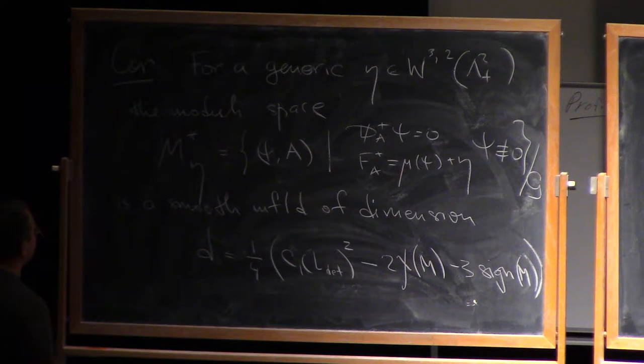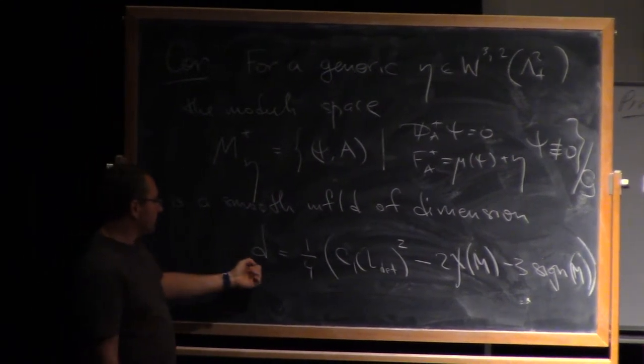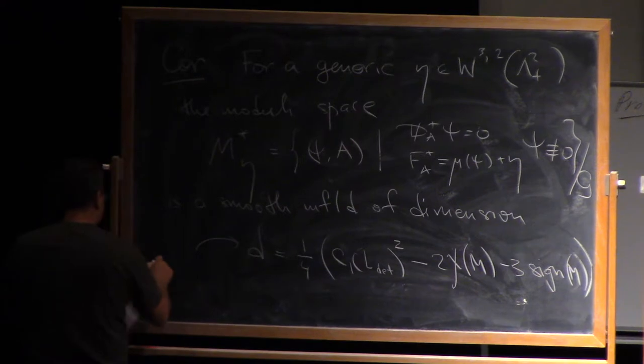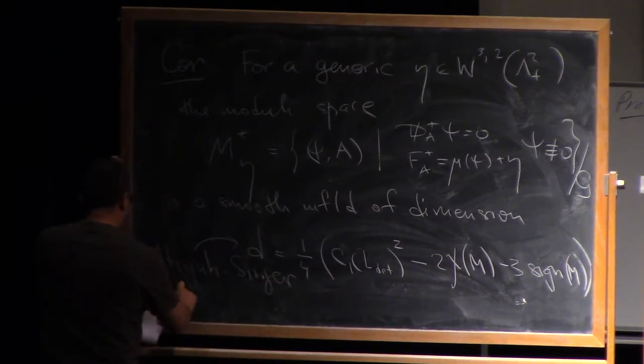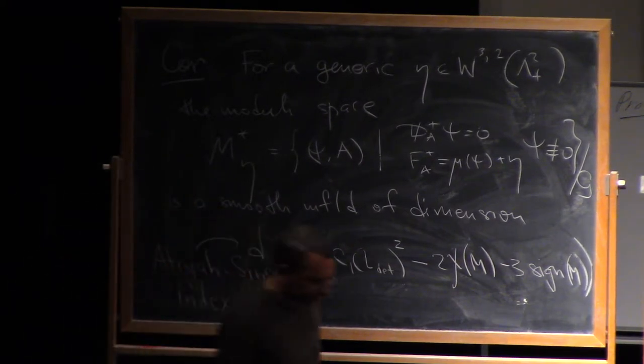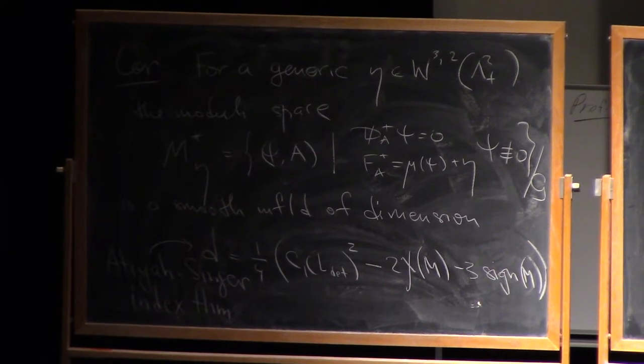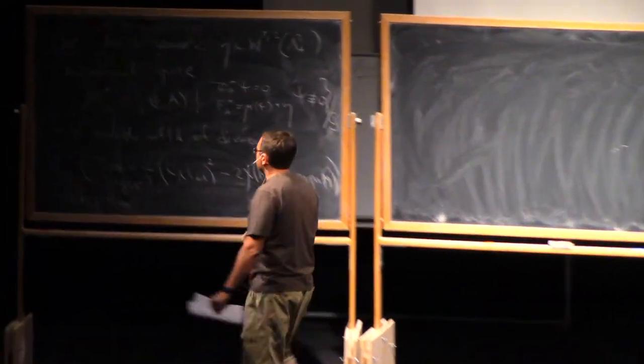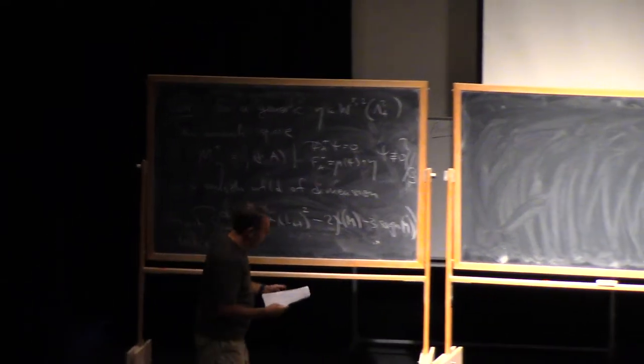You have already seen that this is a manifold for generic η, and the only thing perhaps unclear is where this dimension comes from. This dimension comes from the Atiyah-Singer index theorem. I don't want to give you the precise statement, but whenever you have a linear elliptic operator, the index theorem tells you that the index can be computed in terms of characteristic classes. If you plug this into the corresponding formula, the output is this formula.